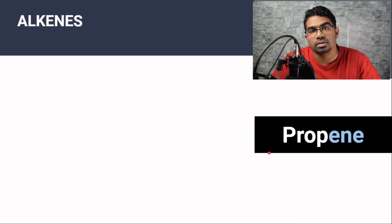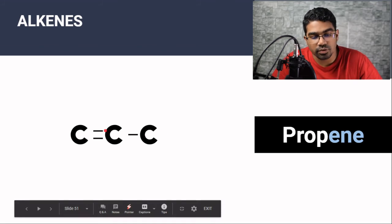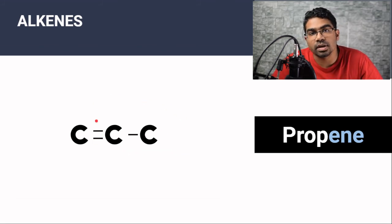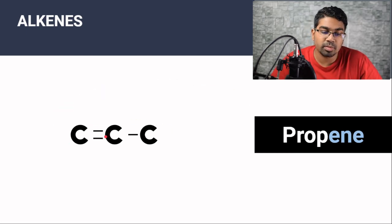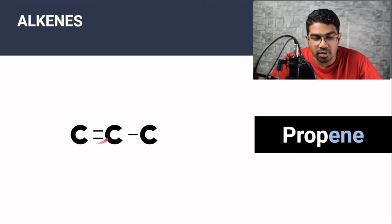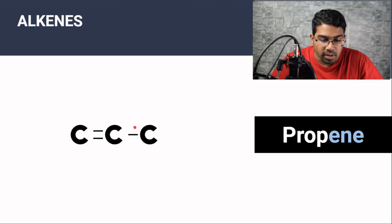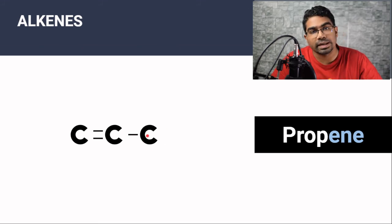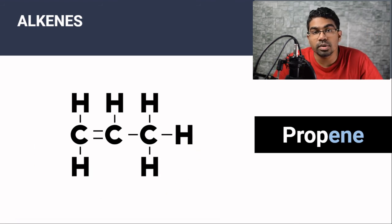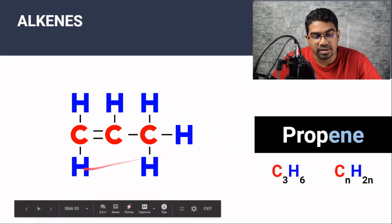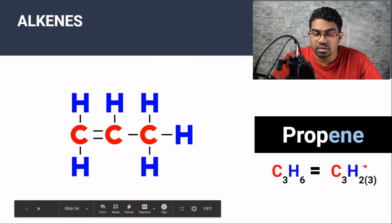Prop is the prefix for three carbons, so for propene we draw three carbon atoms with one carbon-carbon double bond. It doesn't matter where the double bond is placed for propene — I'll get into detail about this when we study isomerism. The carbon on the left has two bonds already and can form two more with hydrogen. The carbon in the middle has three bonds and can form only one more with hydrogen. The carbon on the right has one bond and can form three more with hydrogen. Propene's molecular formula is C3H6. Using the general formula: if n = 3, then H = 2(3) = 6.